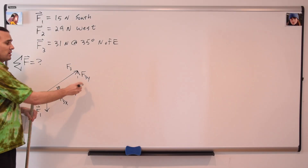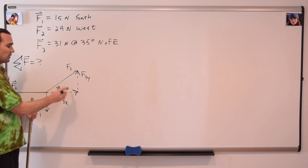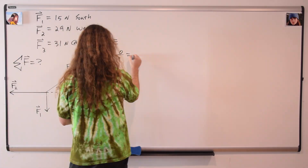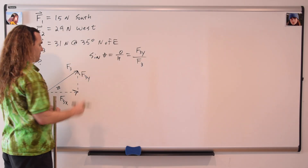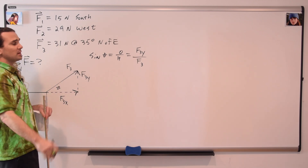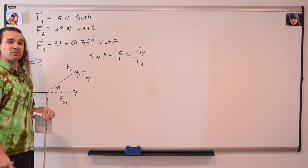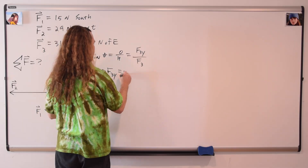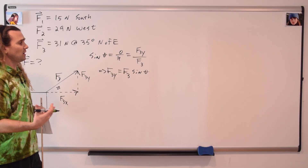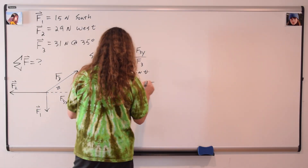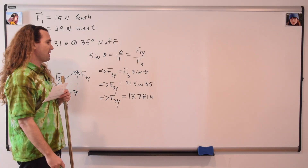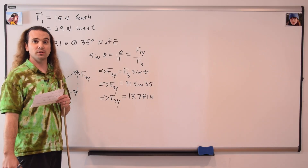The components of force three are force three in the y direction and force three in the x direction. We can use SOH-CAH-TOA to do so. Sine of theta equals opposite over hypotenuse. The opposite of theta is force three in the y direction; the hypotenuse is force three. Multiplying by force three gives us force three in the y direction equals force three times the sine of theta. Substituting in values: force three in the y direction equals 31 times sine of 35 degrees, which is 17.781 newtons.